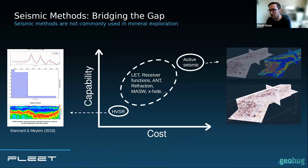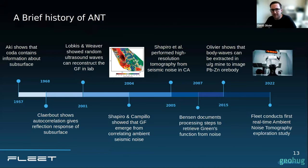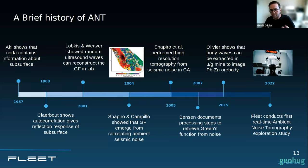Even though I refer to it as a new method, the genesis started in the 1950s with Keiiti Aki — probably one of the most famous seismologists ever — who showed that scattered waves we normally think of as noise contained information about the subsurface. John Claerbout, a decade later, said you can retrieve the reflection response from a receiver by doing autocorrelations. That has a link to the fluctuation-dissipation theorem and Brownian motion for those interested.